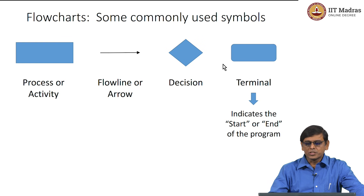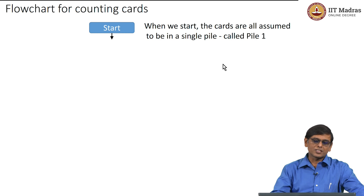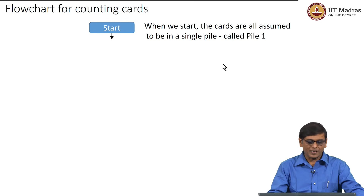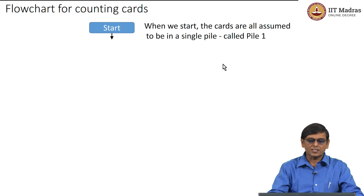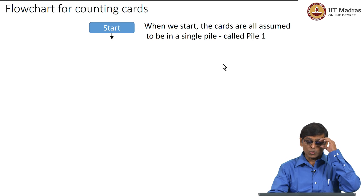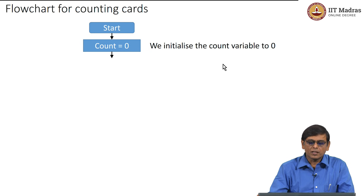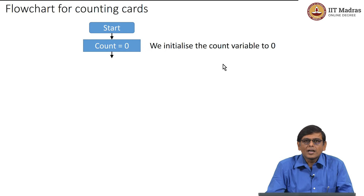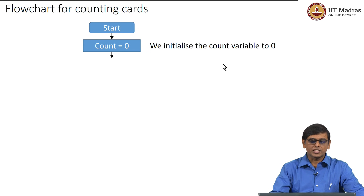We can use these four symbols to describe the flowchart for counting. Let us look at how to count cards using a flowchart so that somebody else looking at it can understand the sequence of steps. The first thing is to start, so the first symbol will always be the start terminal followed by an arrow. We assume that all the cards we want to count are in a single pile, pile 1. The first activity is to initialize the variable count to 0, written inside the rectangular process box.